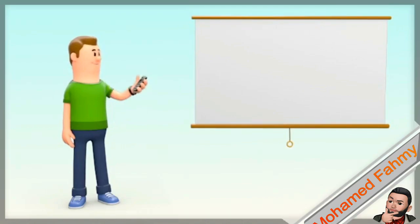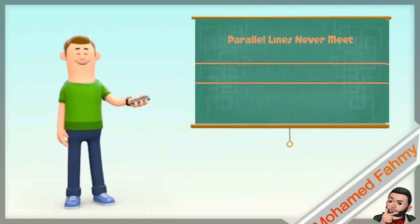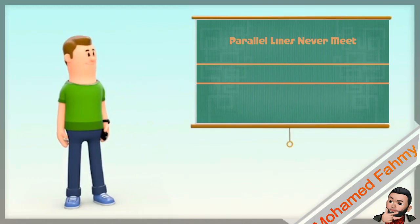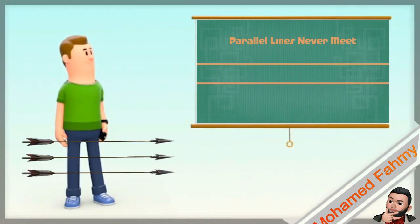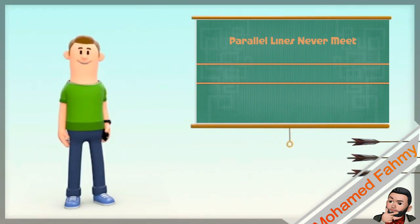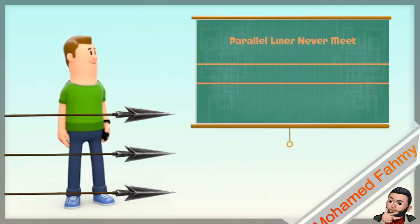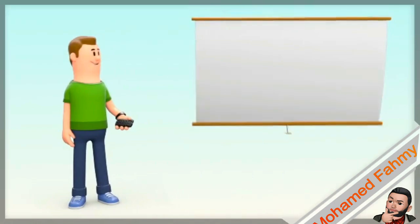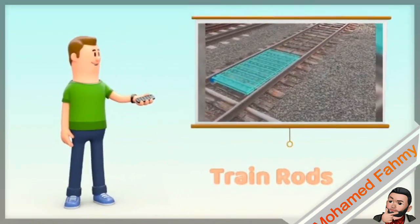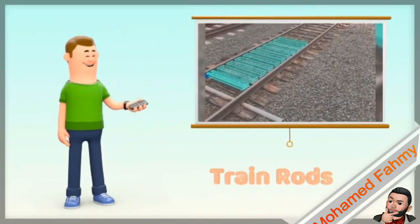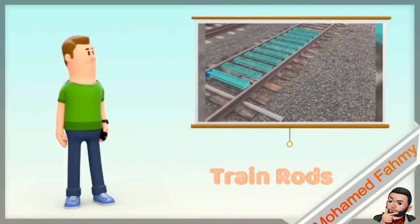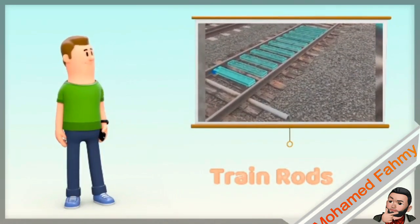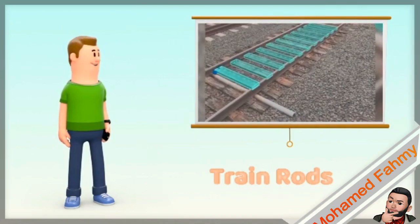As you see these two lines, they are parallel, so they never intersect, never meet. Look at these R's. These R's are parallel to each other, so they never intersect. The next example for the parallel lines, the train roads. As you see, all of the train roads are parallel to each other.